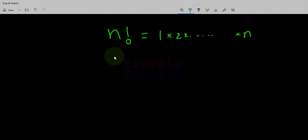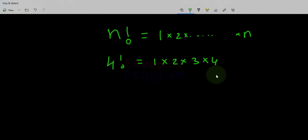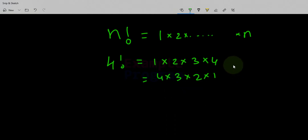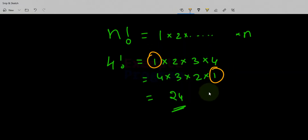Now let us say we have the number 4. Then 4 factorial equals 1 multiplied by 2 multiplied by 3 multiplied by 4. We can also write it in reverse order: 4, 3, 2 and 1. The result will be the same and we get 24. We can also avoid multiplying by 1 because that is not going to change the value.